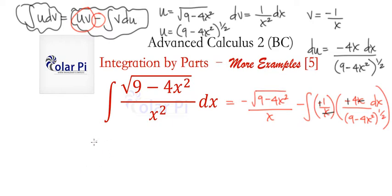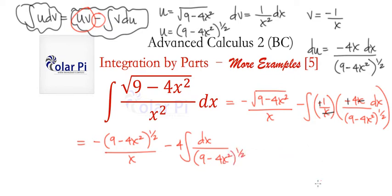If we so chose, we can take that out and write it in front of the integral behind that minus sign. Doing all that means we write that our integral equals negative 9 minus 4x squared to the 1/2 power over x, and then minus 4 times integral dx divided by 9 minus 4x squared to the 1/2 power.